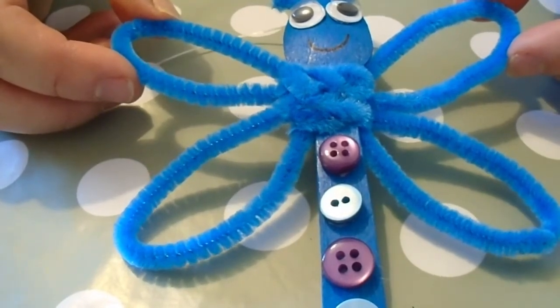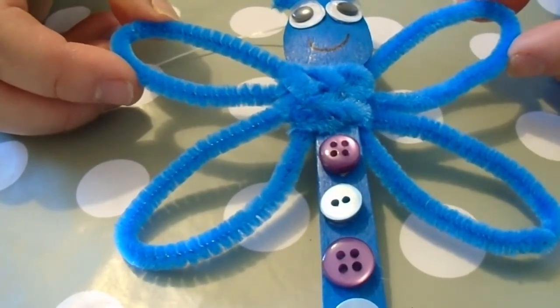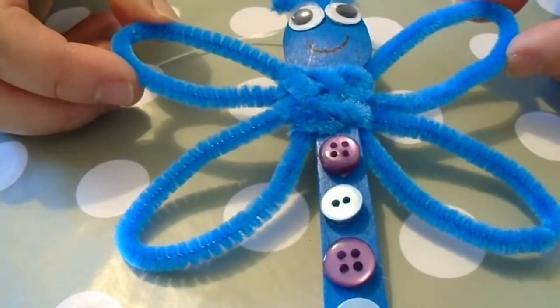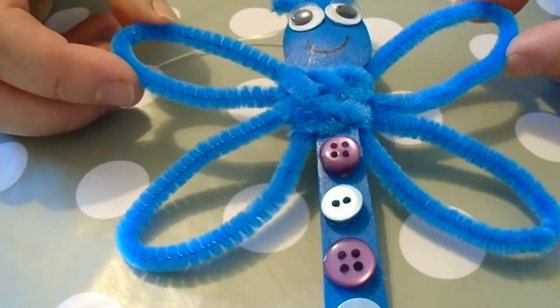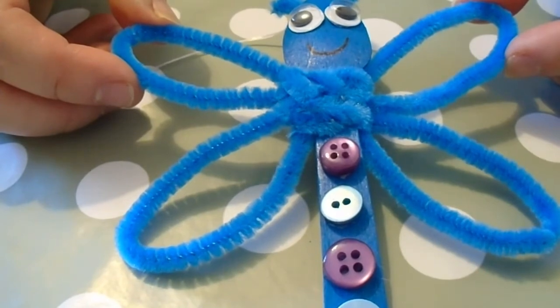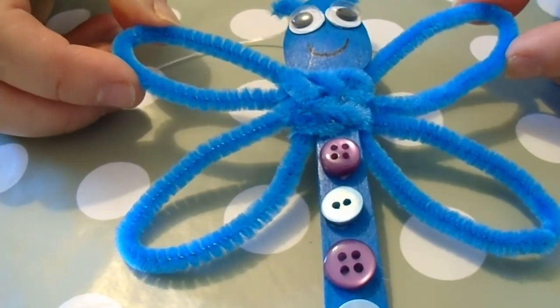You're going to need a wooden teaspoon, two wiggle eyes, some pipe cleaners, about two to three, some decoration materials such as buttons or sequins or whatever you have to hand, a felt tip or a permanent marker, and some glue dots.